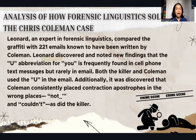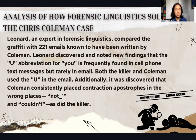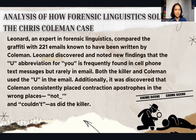Now we move to the analysis of how forensic linguistics can solve the Chris Coleman case. Robert Leonard, an expert in forensic linguistics, compared the graffiti with 221 emails known to have been written by Coleman. Leonard discovered new findings: the letter 'U' as an abbreviation is frequently found in cell phone text messages but rarely in email. Both the killer and Coleman used 'U' in the email. Additionally, it was discovered that Coleman consistently placed contraction apostrophes in the wrong places.